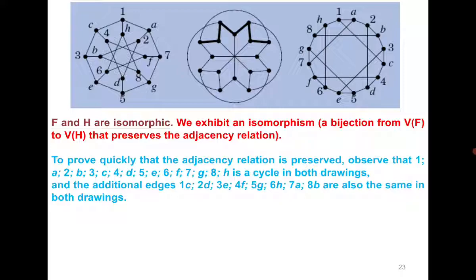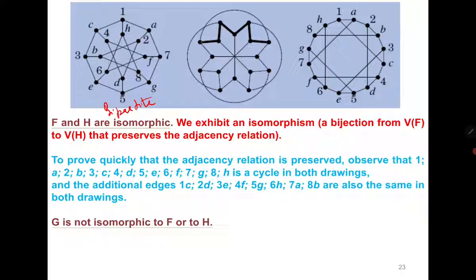One more interesting observation: if someone asks whether the 1st and 3rd graphs are bipartite, based on the bijection we defined, we can clearly partition into two sets — one with letter-labeled vertices and one with number-labeled vertices — making the graph bipartite. However, the middle graph contains a cycle of length 1, 2, 3, 4, 5, 6, 7, which is an odd cycle. This means the middle graph is not bipartite, and this is an easy way to prove the middle graph is not isomorphic to the others.